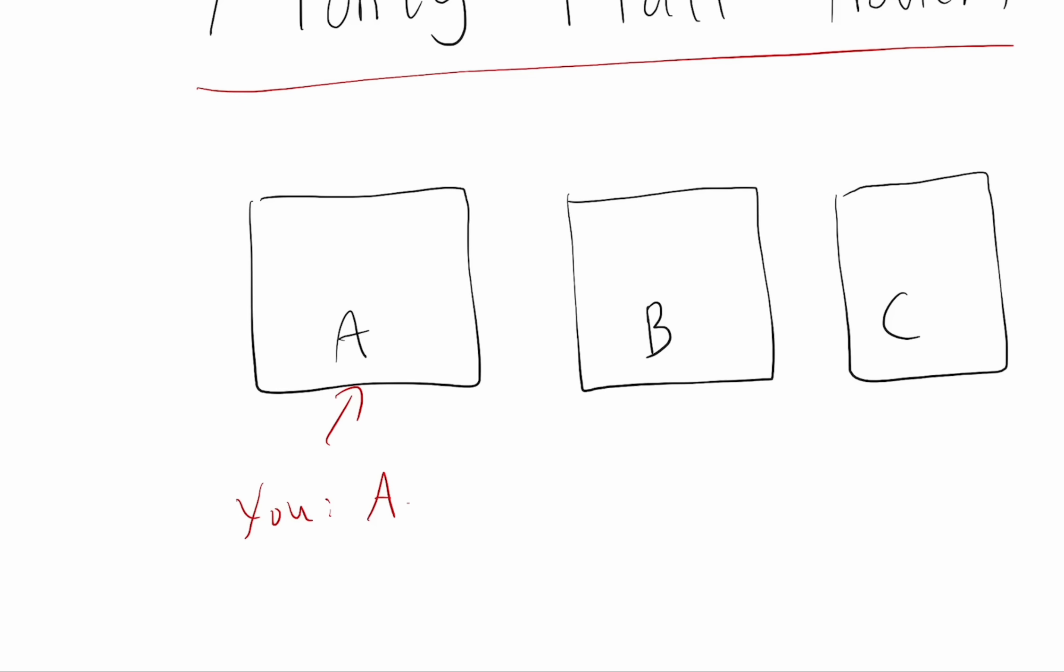But let's say the true prize was behind B. Then the game show host would just open C to show you that there's nothing, and then you would either pick A or B. Or if the true prize was behind door C, then in that case, the game show host, who knows where the prize is, by the way, would have to open B, and then you can either stick with A or choose C.